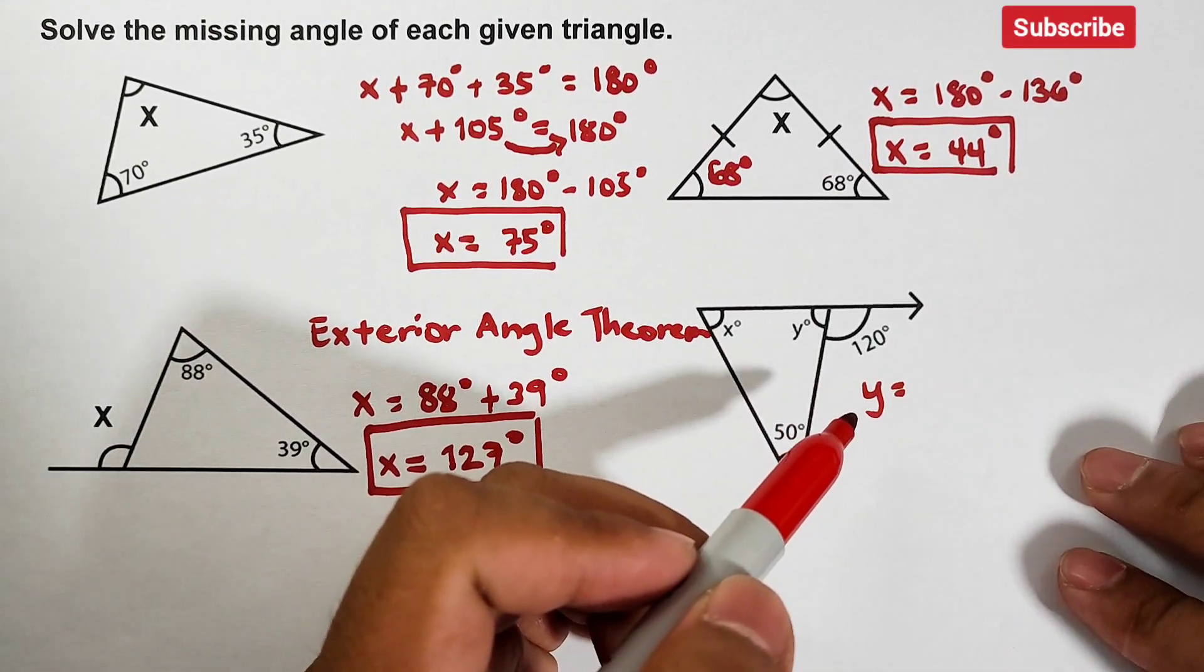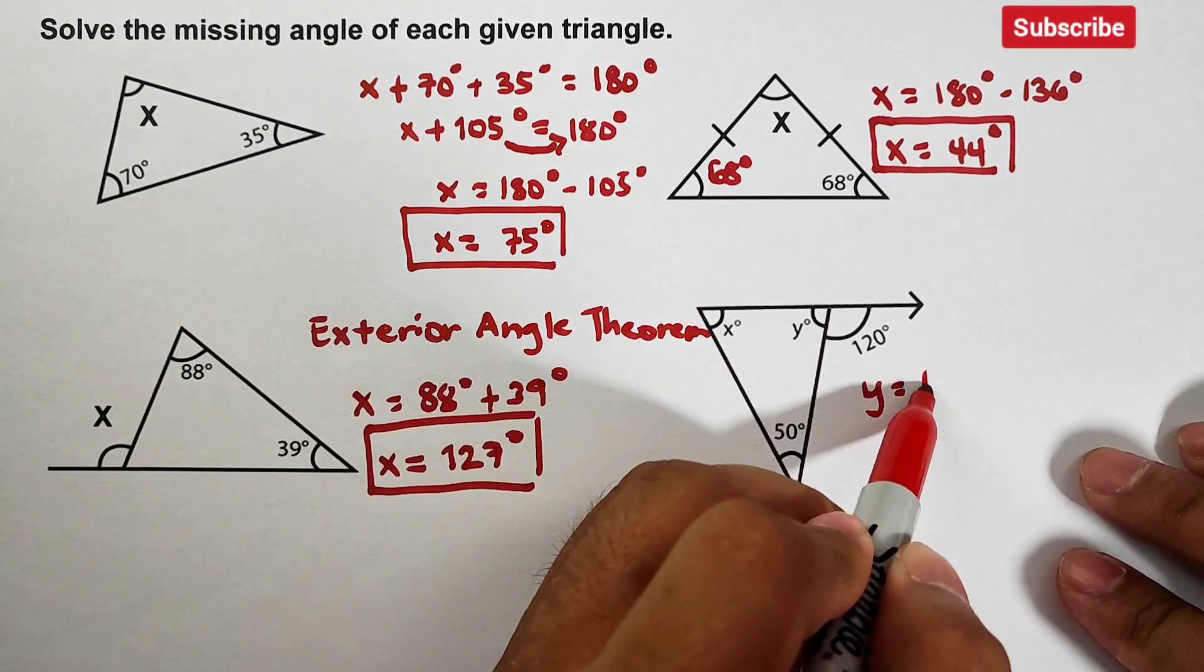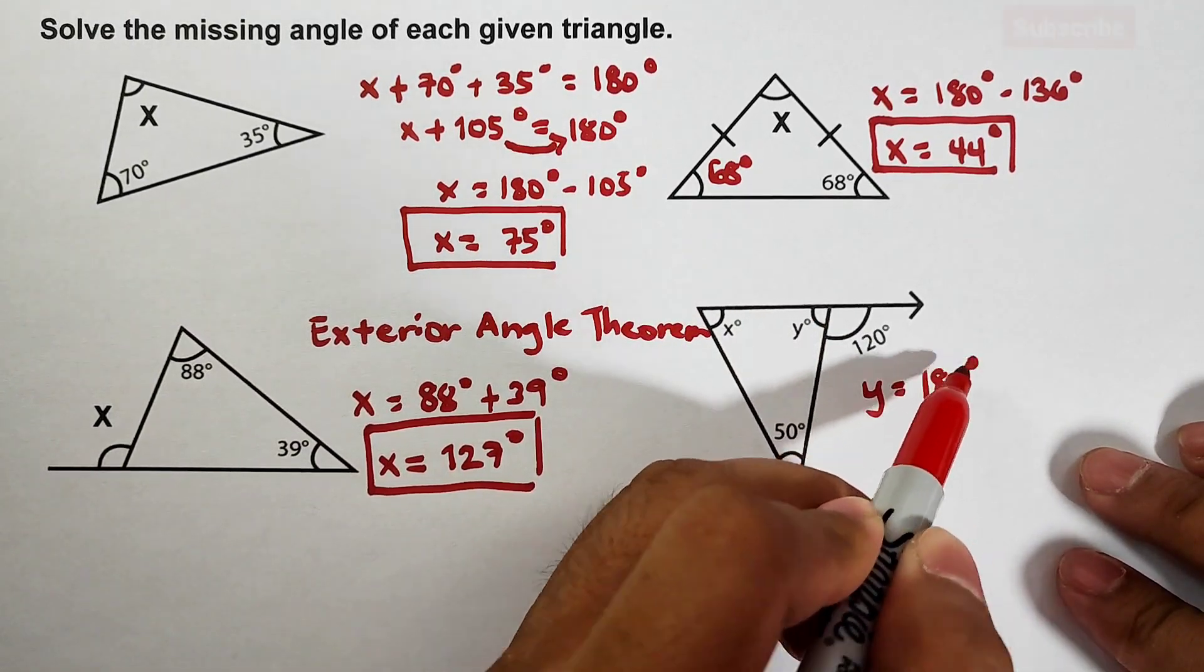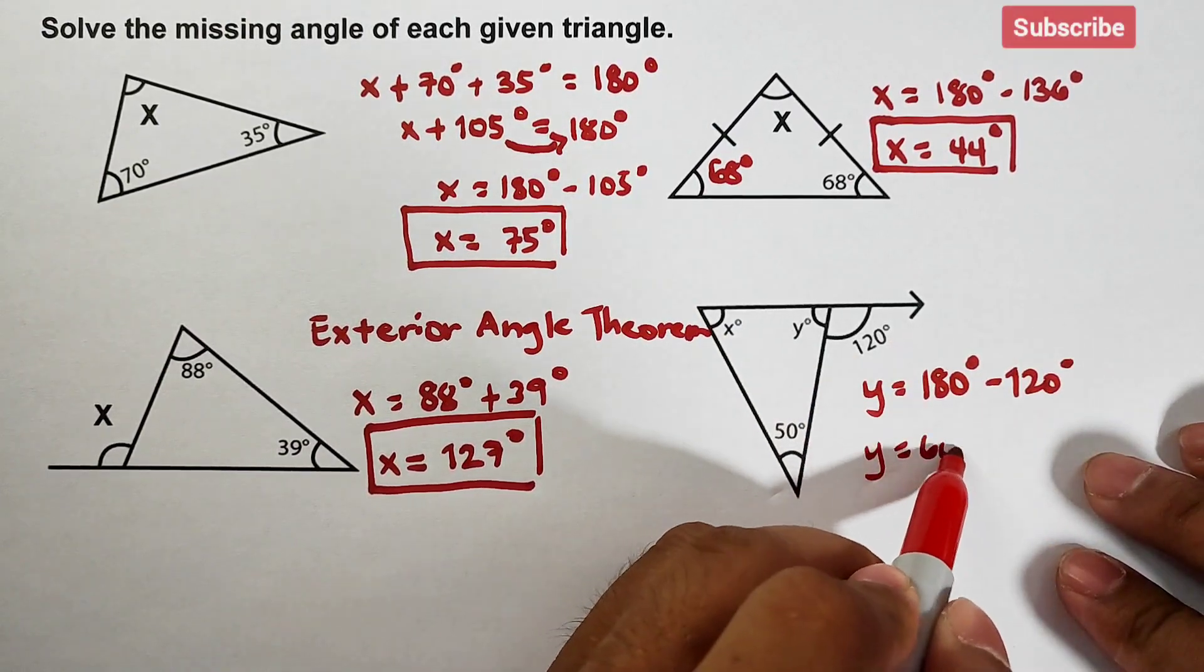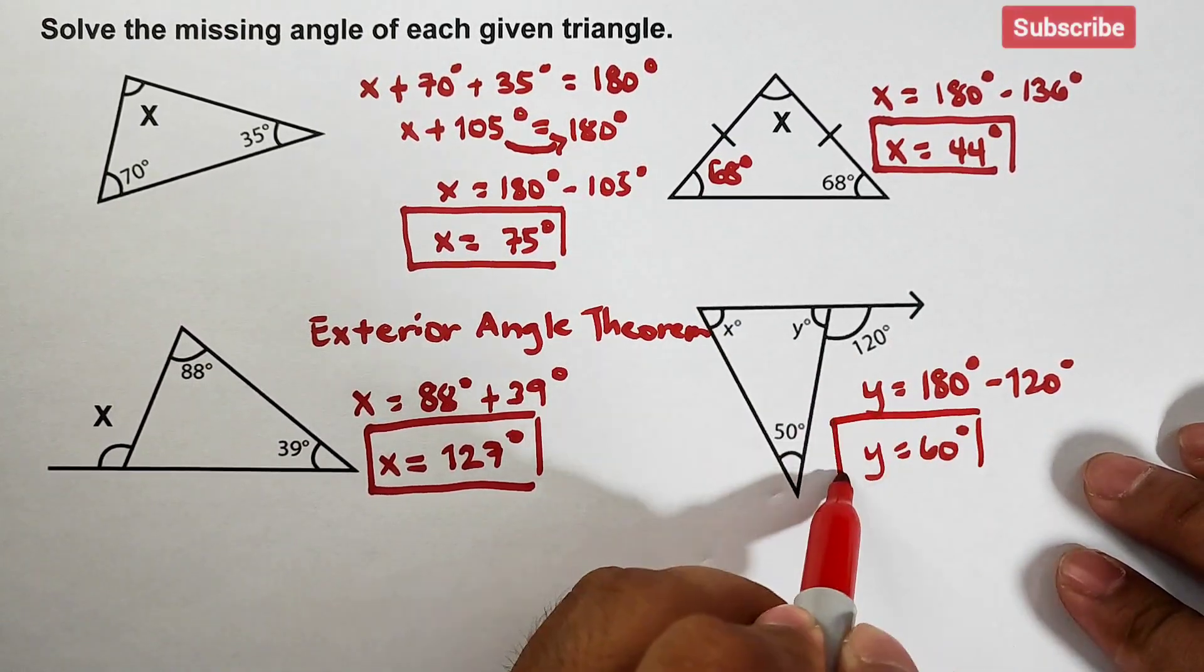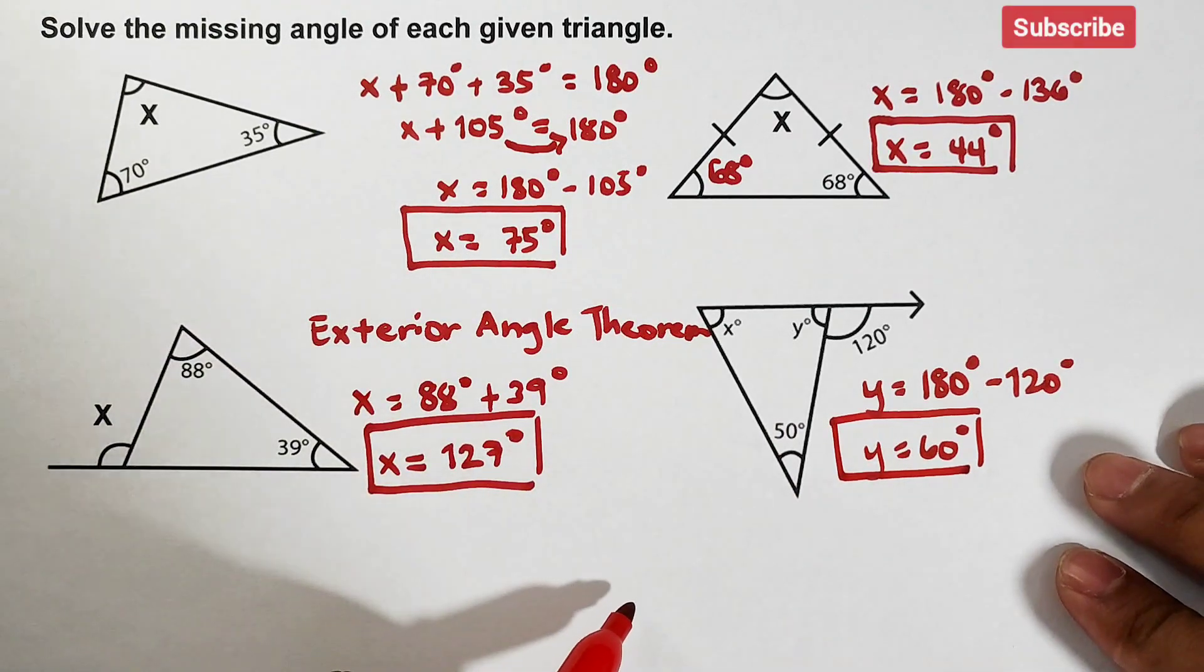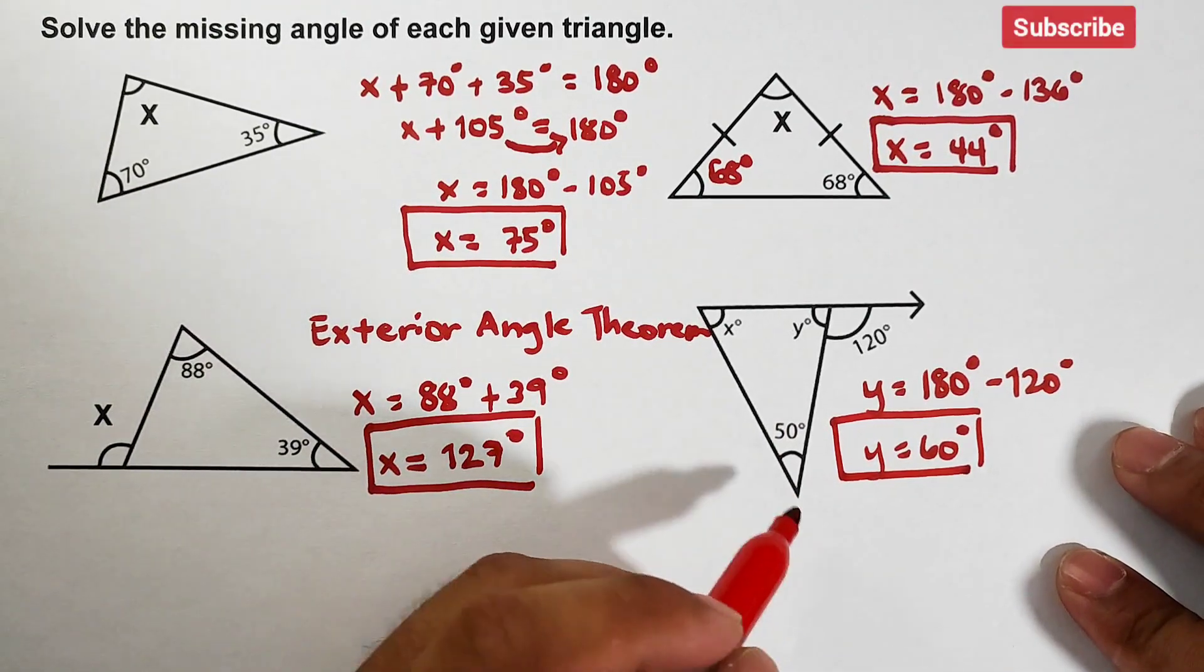So what we need to do, I will subtract 120 from 180. So your y is simply 60 degrees, as simple as that.